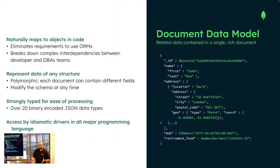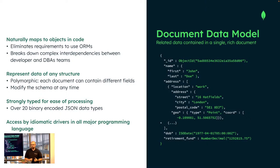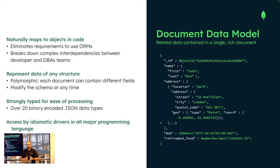At the center of MongoDB we have something called the document data model, which is the basis of the NoSQL part in MongoDB. The great thing about the document model is it naturally maps to objects. When you're building an application — whether mobile or web — you're used to working with objects, whether in C, Java, JavaScript, Python, or whatever programming language you use. Data in MongoDB is represented as objects, allowing you to represent data in the database in the same format as you view it in your application.